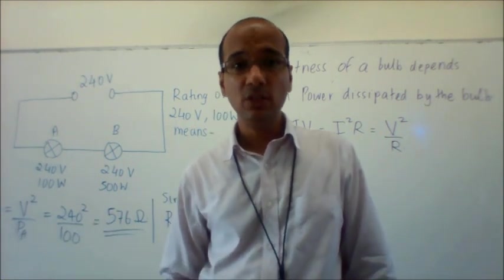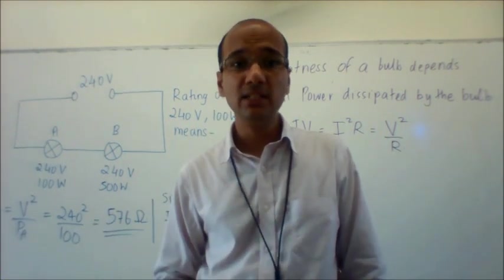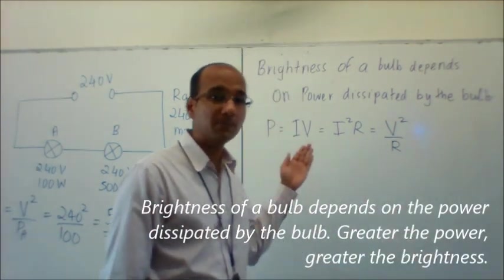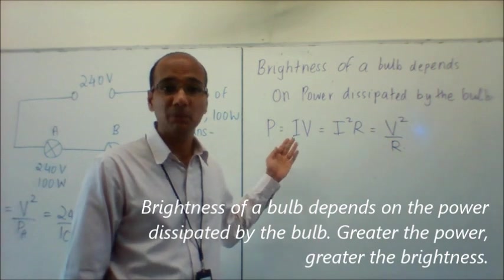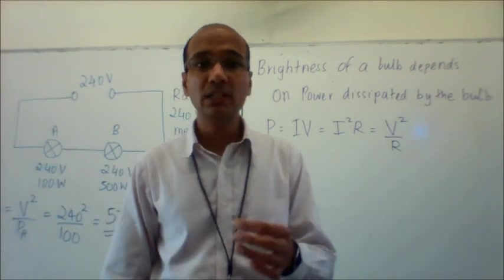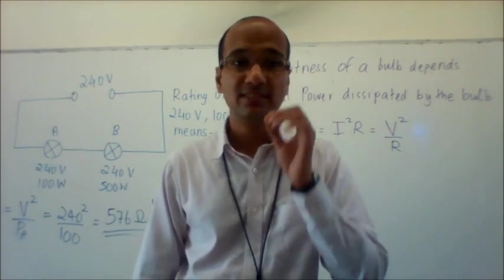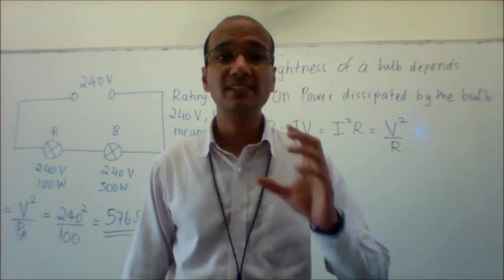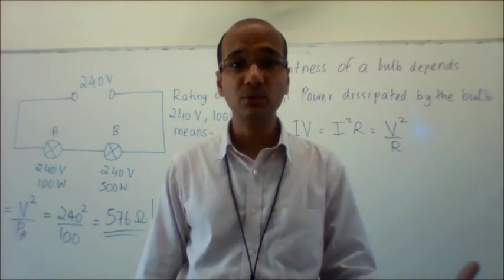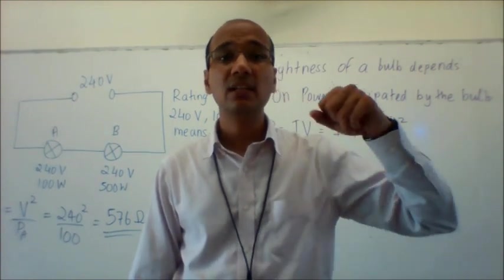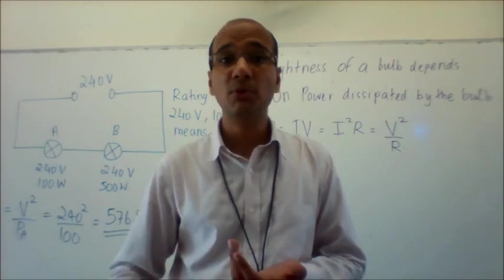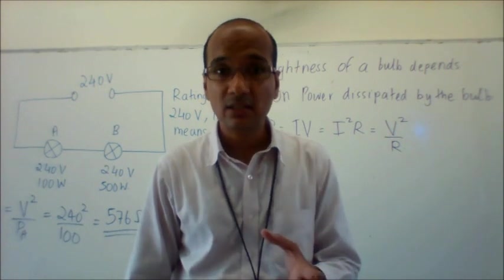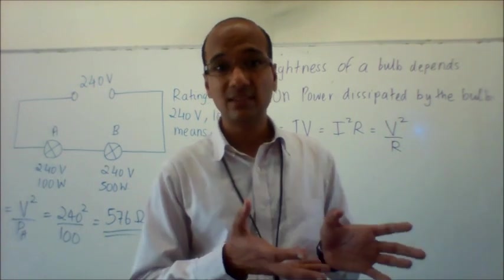To do this comparison, we need to bear in mind that the brightness of a bulb depends on the power dissipated by the bulb. After all, power is energy per unit time. So if bulb A dissipates a larger amount of power, it gives out more energy per second, which makes it the brighter bulb.